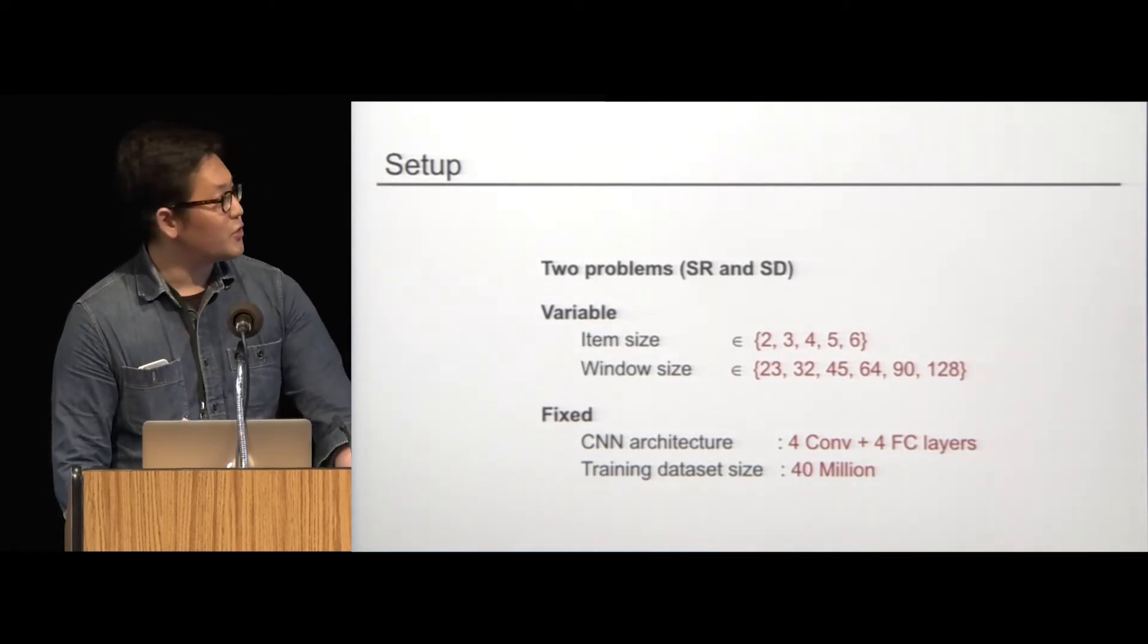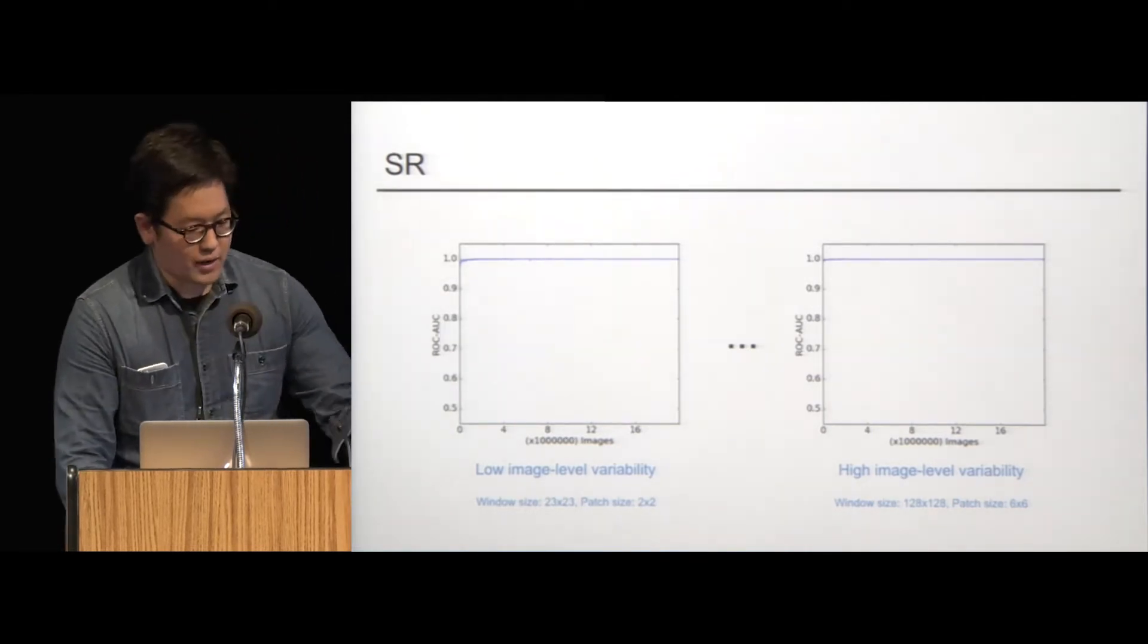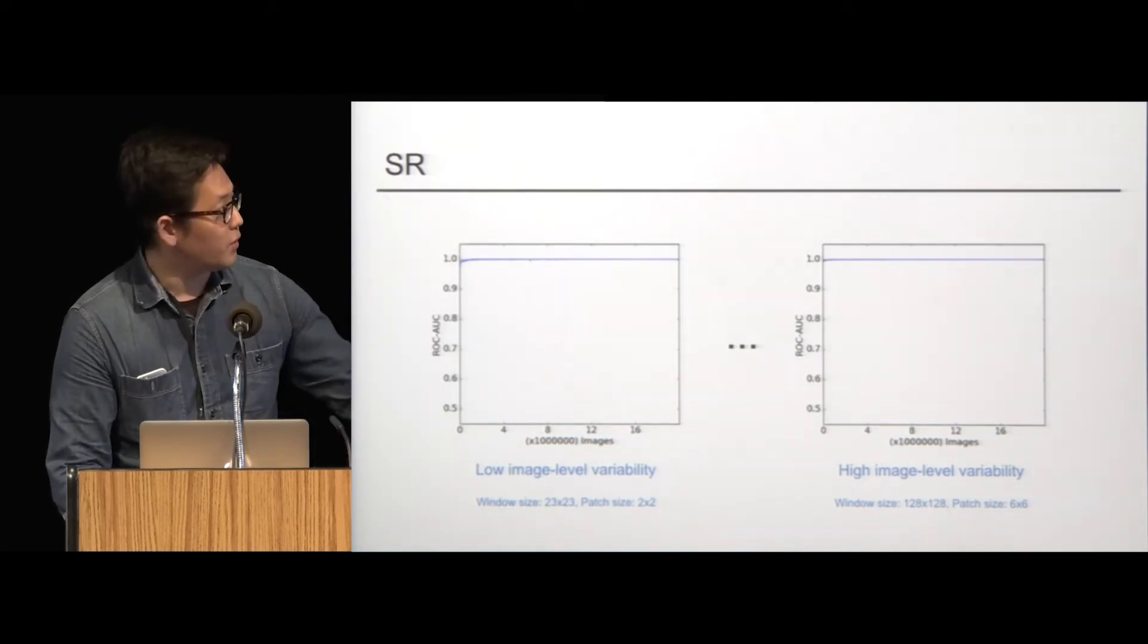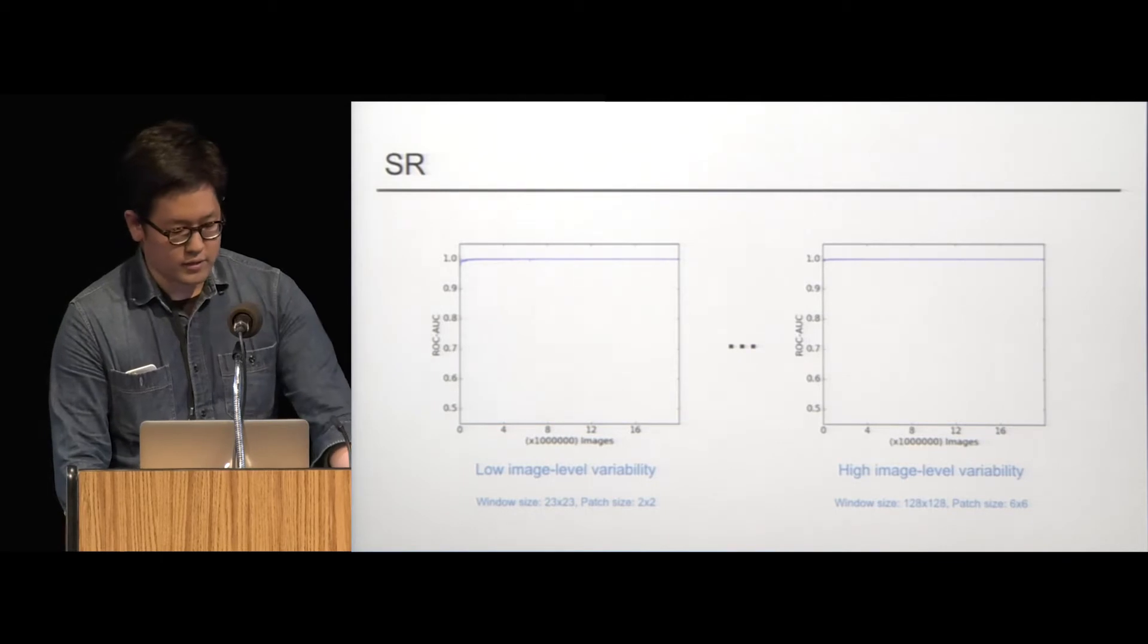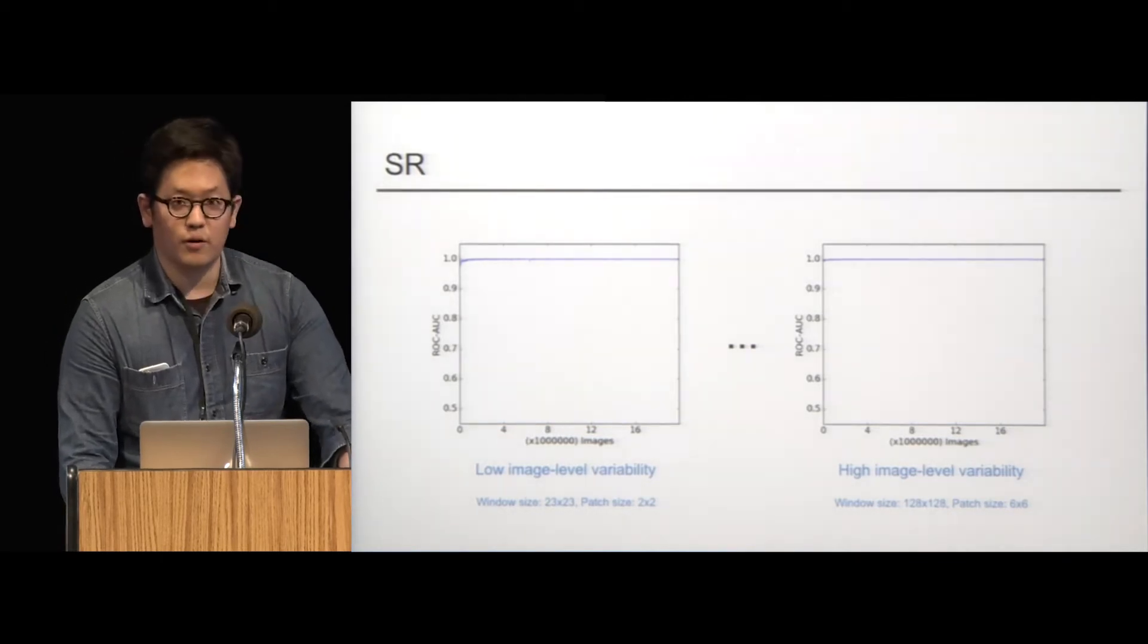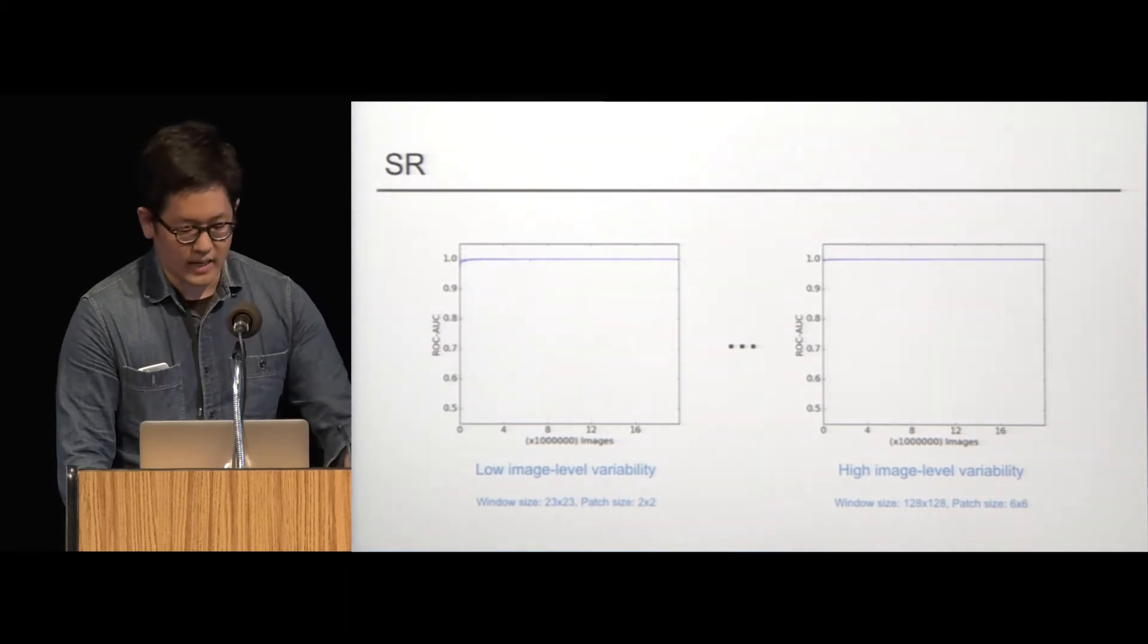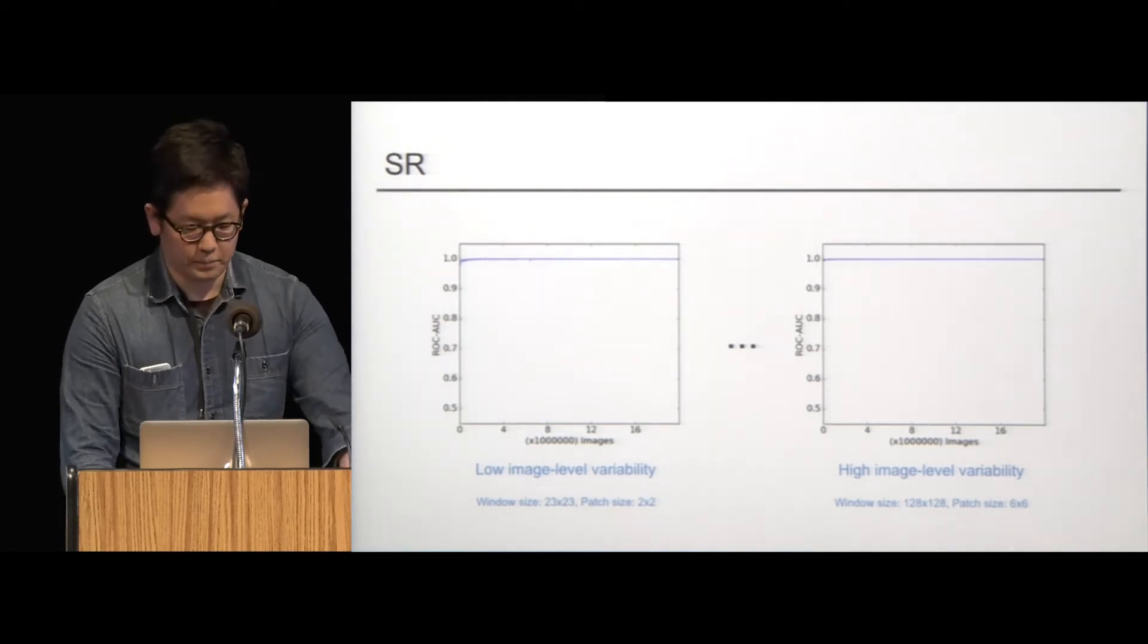Okay. So, here's the result for spatial relations. On the left, we have the one easiest problem parameters. On the right, we have the one for the hardest problem parameters. Both are learning curves. Evidently, the problem is solved with 100% accuracy. Very easy. All problem difficulties, exactly the same result with very small number of examples. Spatial relations is easy.